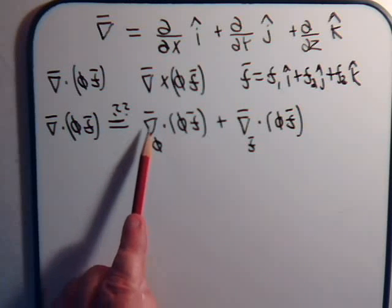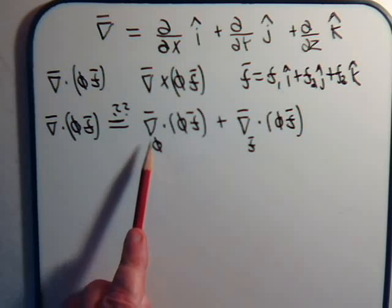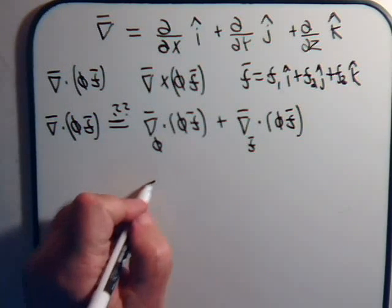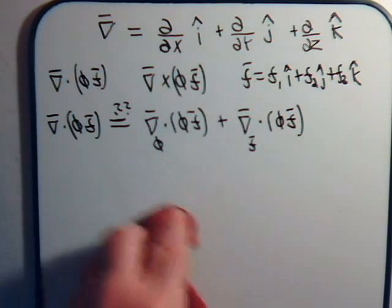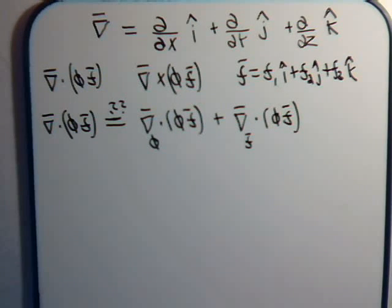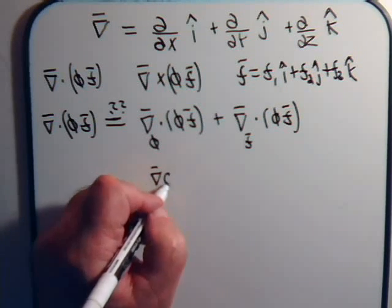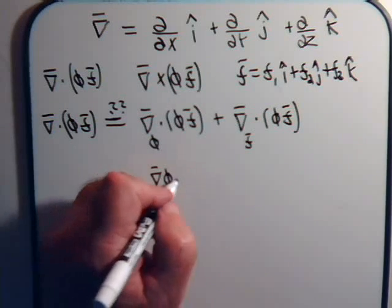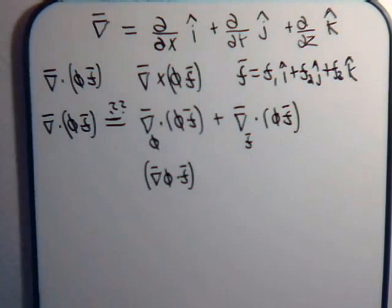We can't have, if this is operating only on phi, we cannot take the dot product of del dot phi because phi is just a scalar. So, that doesn't work. So, the only way that we could have del operating only on phi would be if we had it like this. Operates directly on phi and we take that dot product with the vector f.